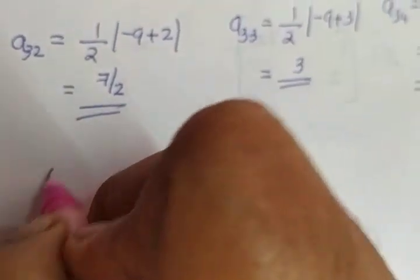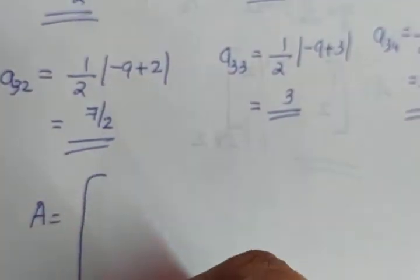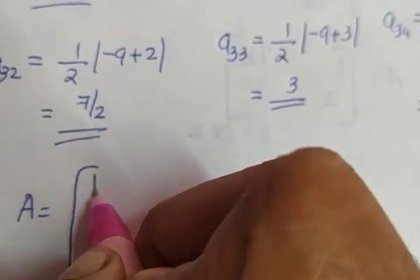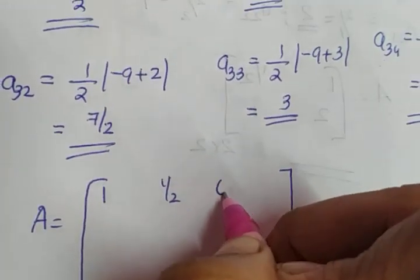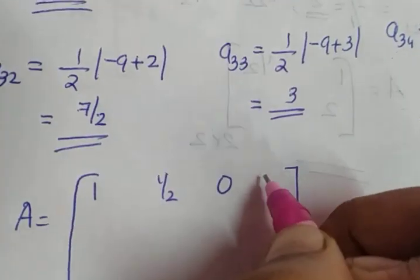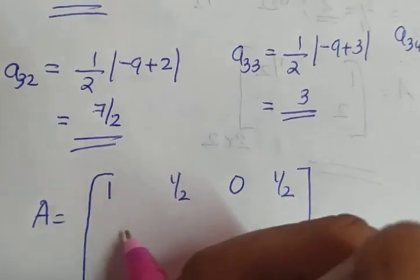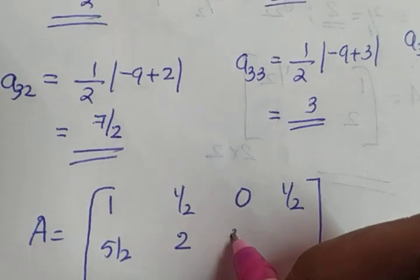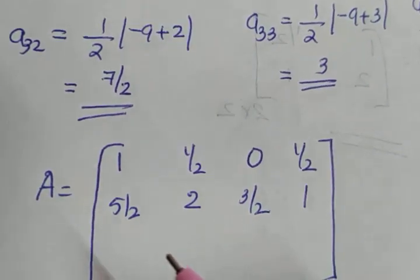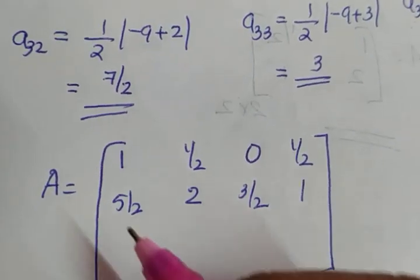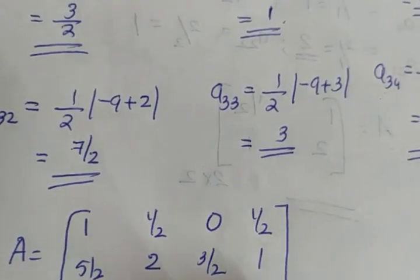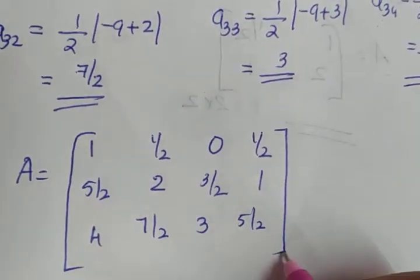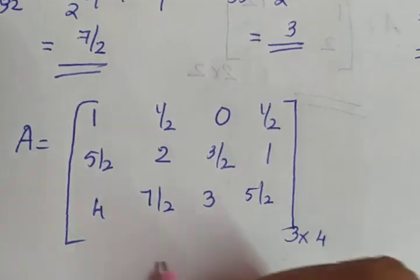Now write the matrix. A is equal to: first row is 1, 1 by 2, 0, 1 by 2. Second row is 5 by 2, 2, 3 by 2, 1. And the last row is 4, 7 by 2, 3, 5 by 2. This is your required 3 by 4 matrix.